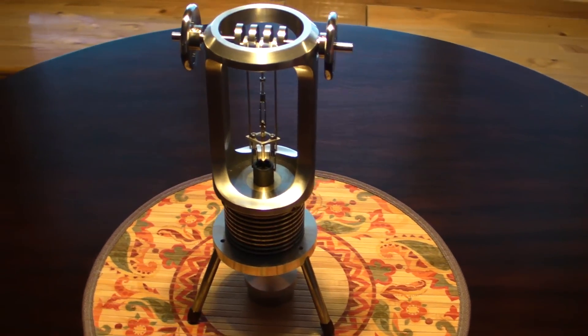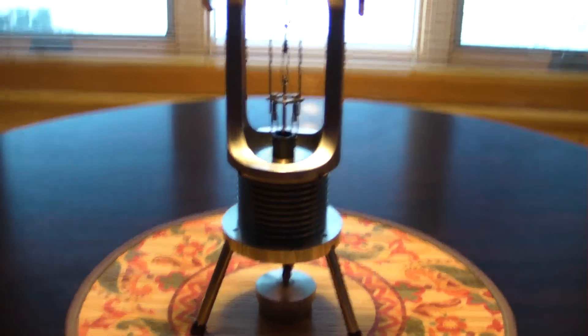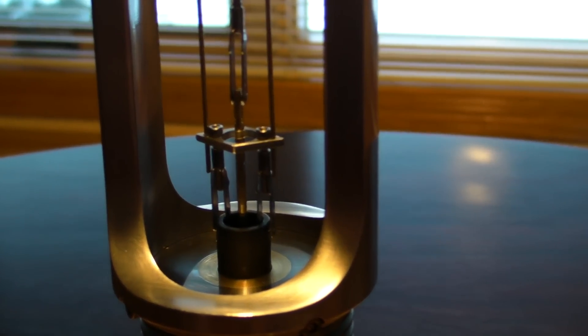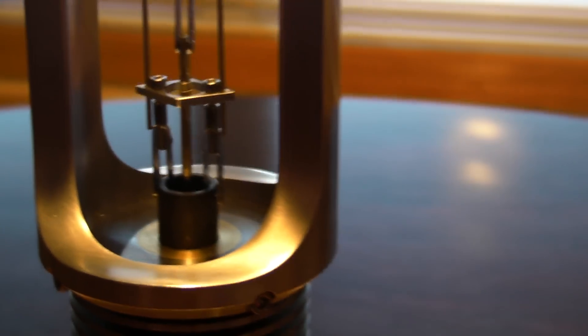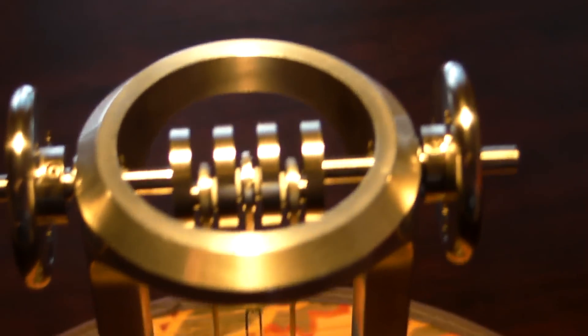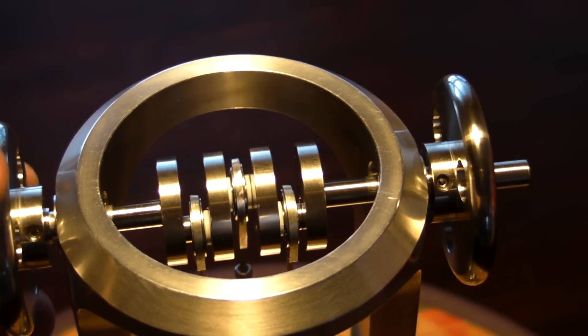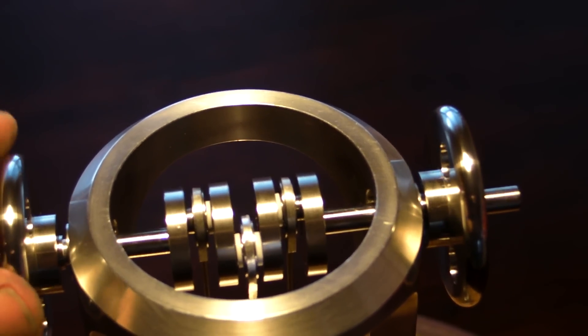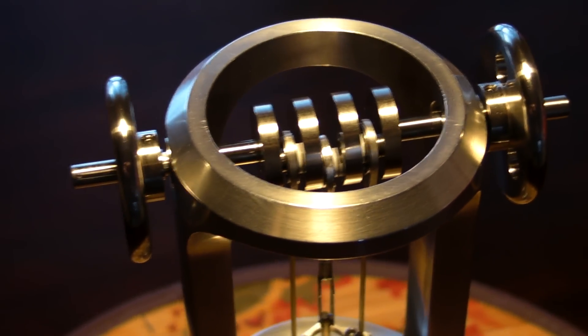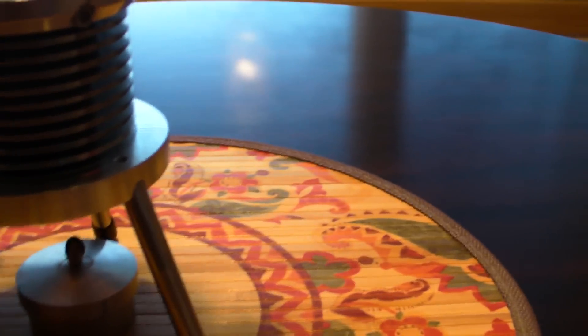This is a Beta Stirling I designed and built. It's vertical configuration and the displacer rod goes right through the center of the power piston, so you need basically like a crankshaft to get everything to work correctly. That's a really interesting sound when it runs and I'll start her up here for you and show you how she works.